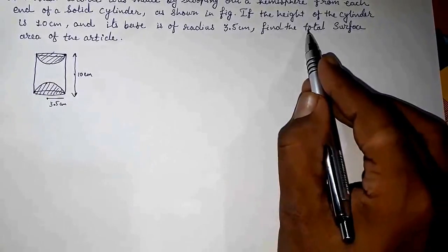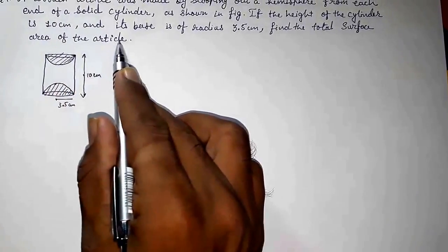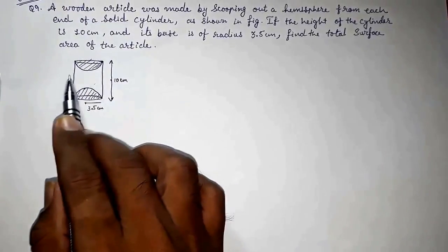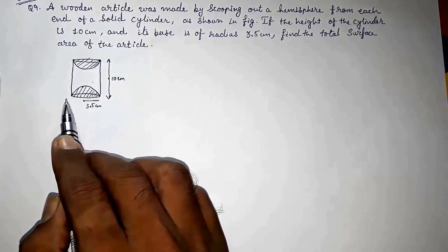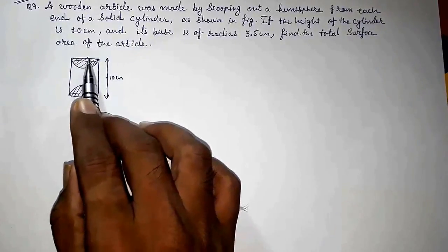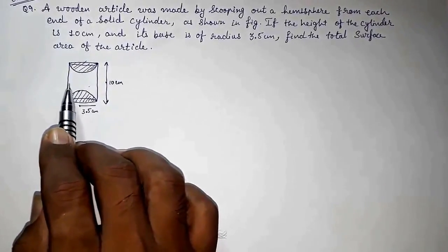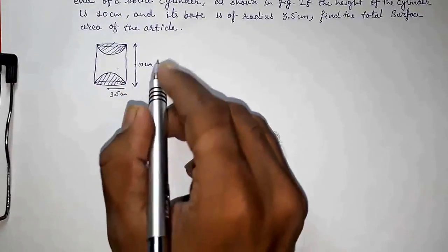Now we have to find the total surface area of the article. What generally students are doing is finding the CSA of this cylinder and the CSA of these two hemispheres and adding it. But actually we don't have to add it, we have to subtract. Why? I am showing it here.